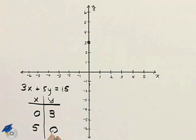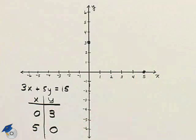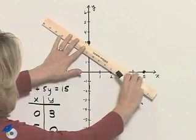And 5, 0 is the other point. 5, 0 is here. I will use a straight edge then to connect these points.